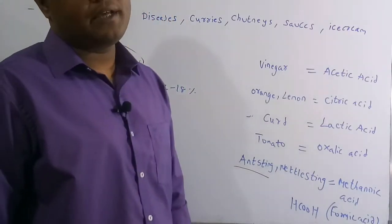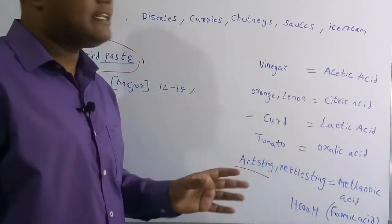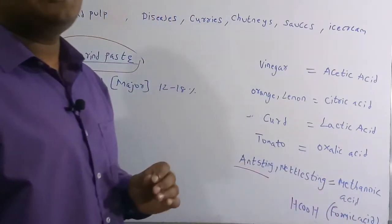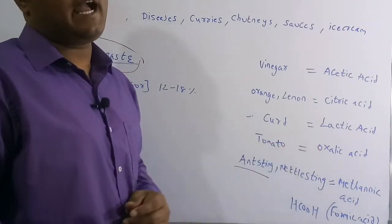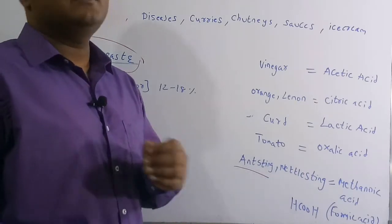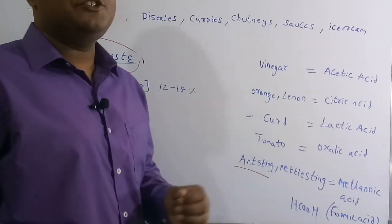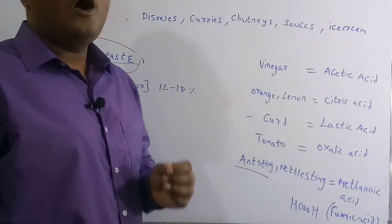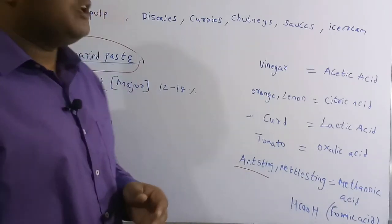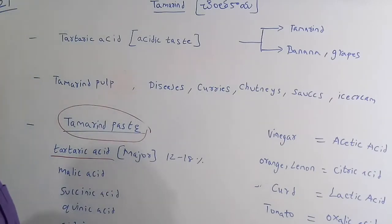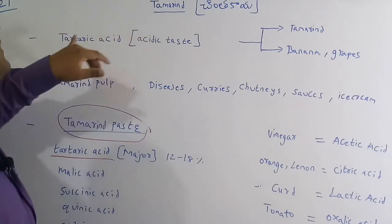The chemical formula of methanoic acid (formic acid) is HCOOH. Whenever an ant bites you, this acid is released by the ant, which is why you feel a burning sensation. To relieve this burning, you can apply soap or baking soda. These are some of the important concepts — in tamarind paste, the major acidic component is tartaric acid.